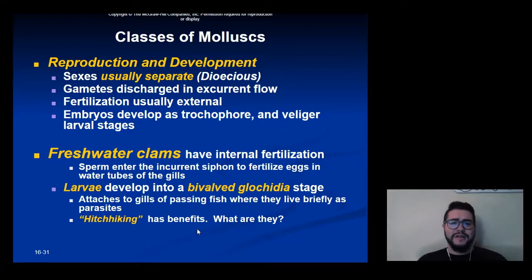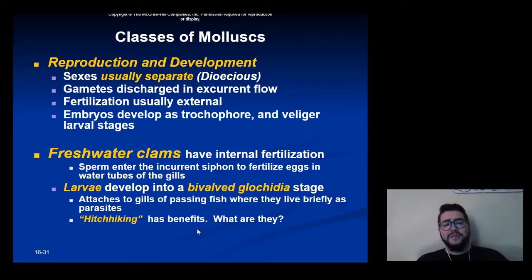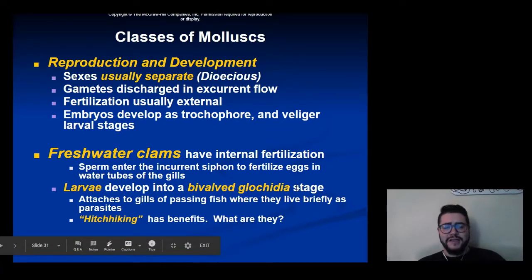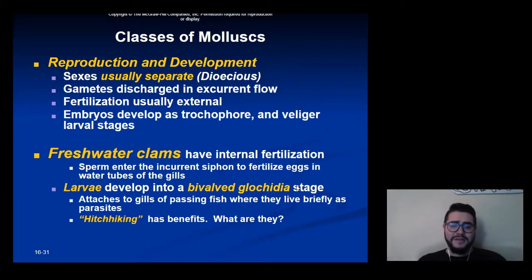Reproduction in bivalves generally involves separate sexes. Gametes are discharged through the excurrent siphons, fertilization is usually external, and the embryo develops from a trochophore to a veliger until it eventually becomes a full-size bivalve. But there are freshwater clams that have internal fertilization. Instead of developing into a veliger, it turns into what's called a glochidia — a larval stage that attaches to the gills of passing fish, living as a parasite until it can hitchhike to a new area with less competition.